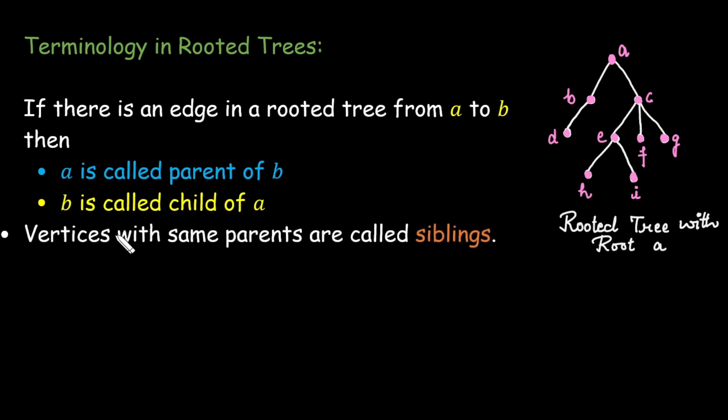Moreover, if two vertices share the same parent they are called siblings. Like in this case b and c are siblings because both have the same parent a.